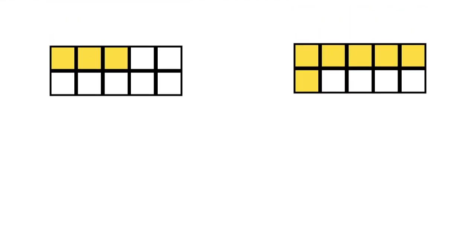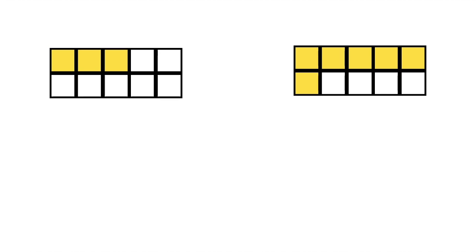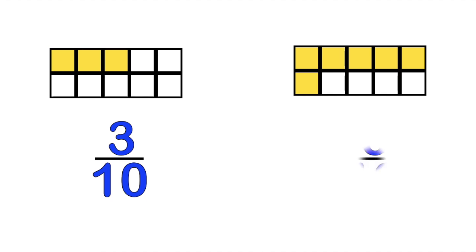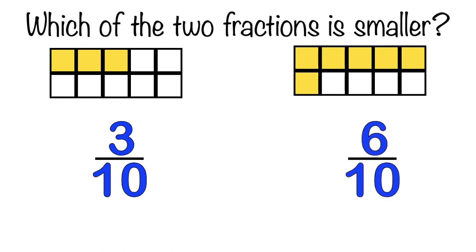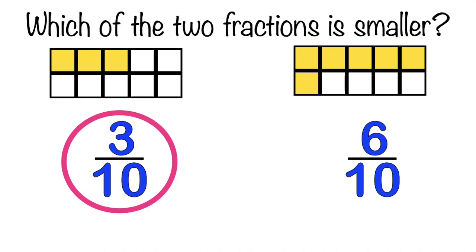How about this illustration? The fraction on the left side is 3-tenths, while the fraction on the right side is 6-tenths. Which of the two fractions is smaller? That's correct, children. It's 3-tenths.